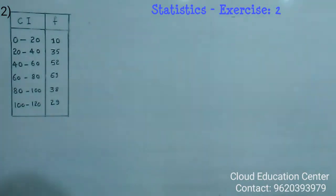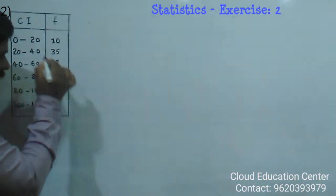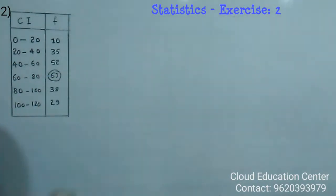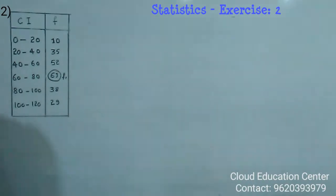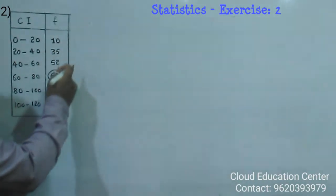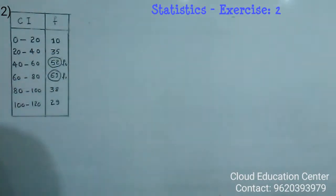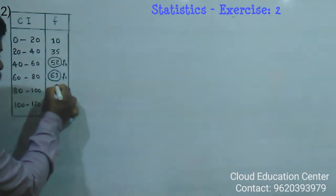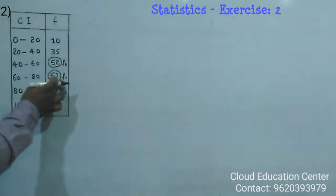Here we have to observe in this frequency which is the greater value. So here 61 is the greater value, it is called F1. And preceding to this greater value is 52, it is called F0. And succeeding to this one is called F2.